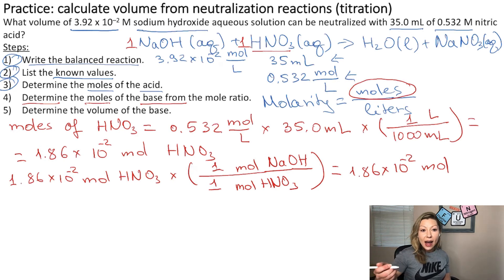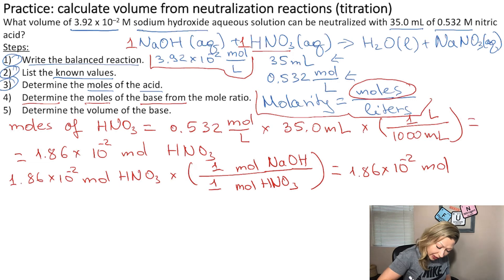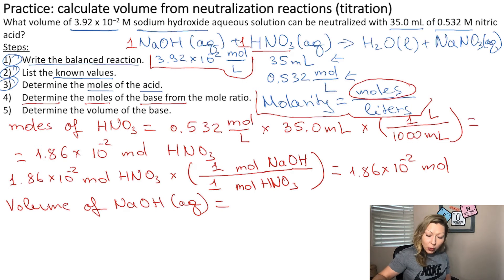Now I have the moles of the base, and I actually also have the concentration of the sodium hydroxide aqueous solution. So I can use the same formula for molarity to actually calculate the liters of the solution. We can say we can calculate the volume of NaOH aqueous solution. From the molarity equation, we know that the volume can be calculated by taking the moles divided by the molarity.